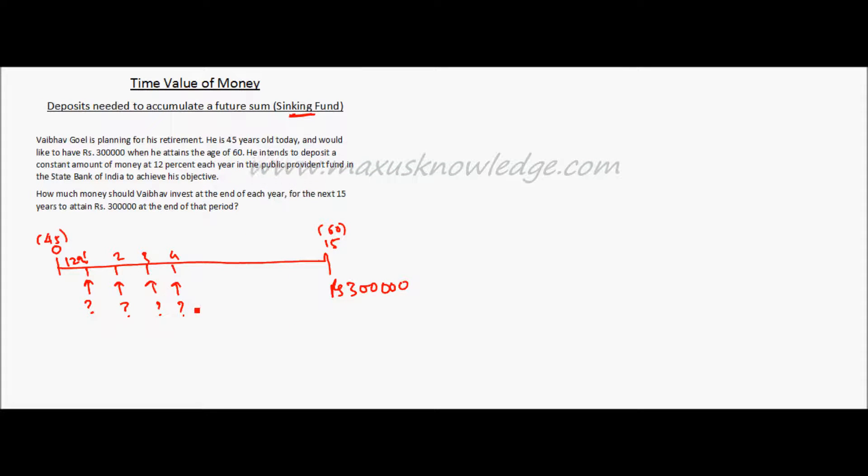This is a typical case of sinking fund where we know what is our goal, or what is the future value, and we want to find out the annuity amount. Now, since Vabhav Goel is depositing the amount at the end of every year, this can be considered as an ordinary annuity. So we will use the formula for future value of an ordinary annuity to find out the annuity amount here.